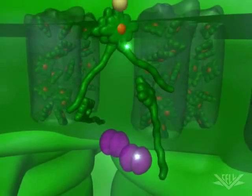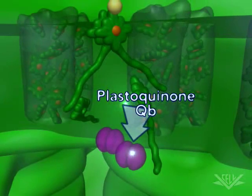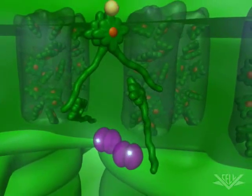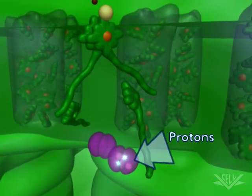Once excited, two electrons are transferred to plastoquinone QB, the first mobile carrier. In addition to the two electrons, QB also picks up two protons from the stroma.